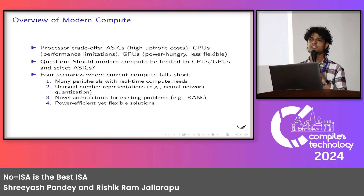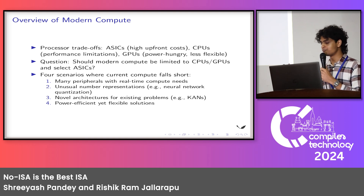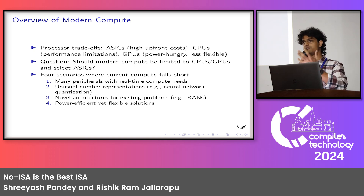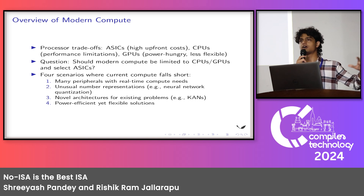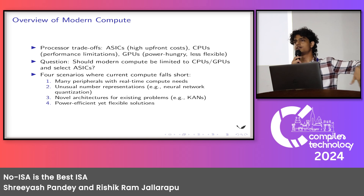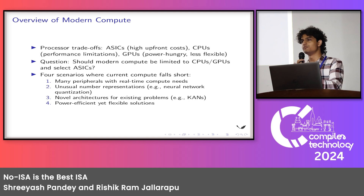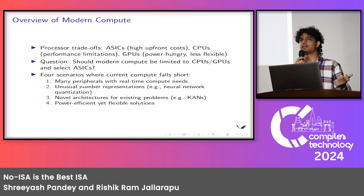So, should we restrict ourselves to these processors that we see every day? Some examples of problems that are slightly challenging to solve with modern compute: the first is an application with a lot of peripherals and a requirement for massive compute — imagine an automotive self-driving car. We need compute for object detection and many peripherals because we are driving real motors in real time. The second example is about unusual number representations — for example, ternary computers. A modern computer would essentially emulate the ternary computer using 8-bit arithmetic; we are not really using ternary.